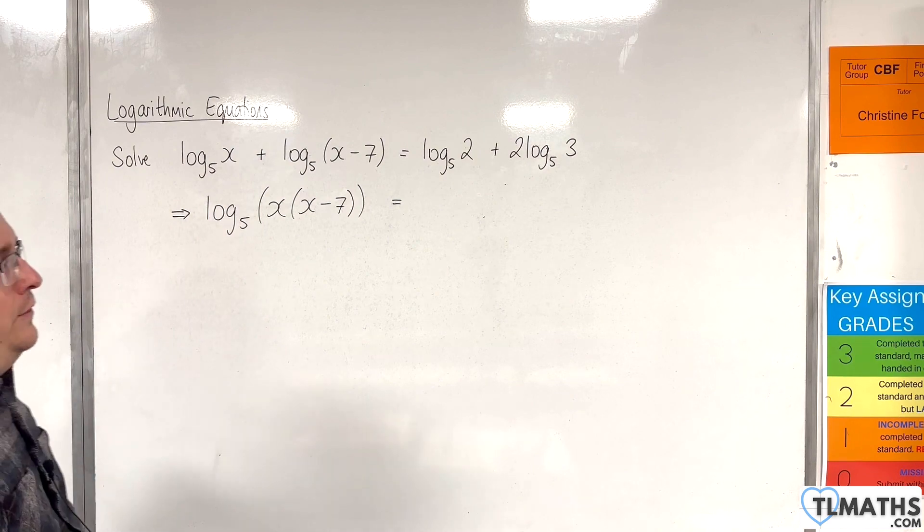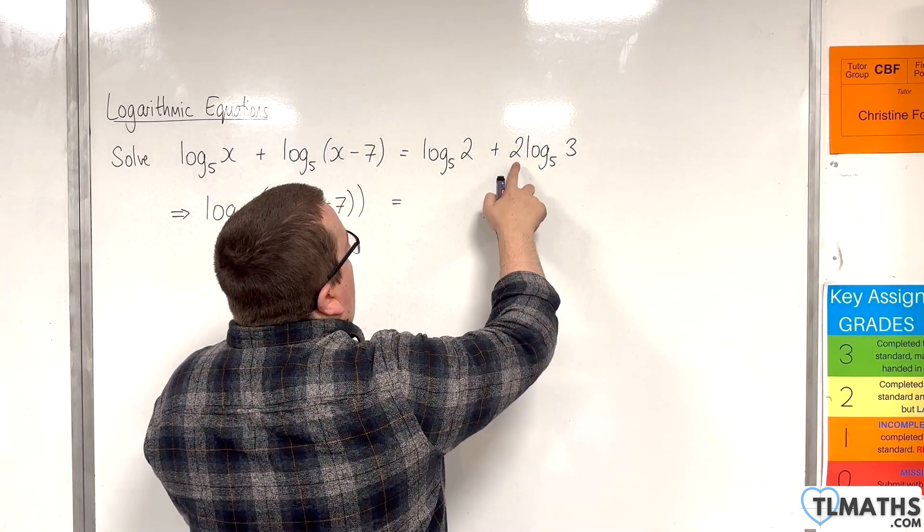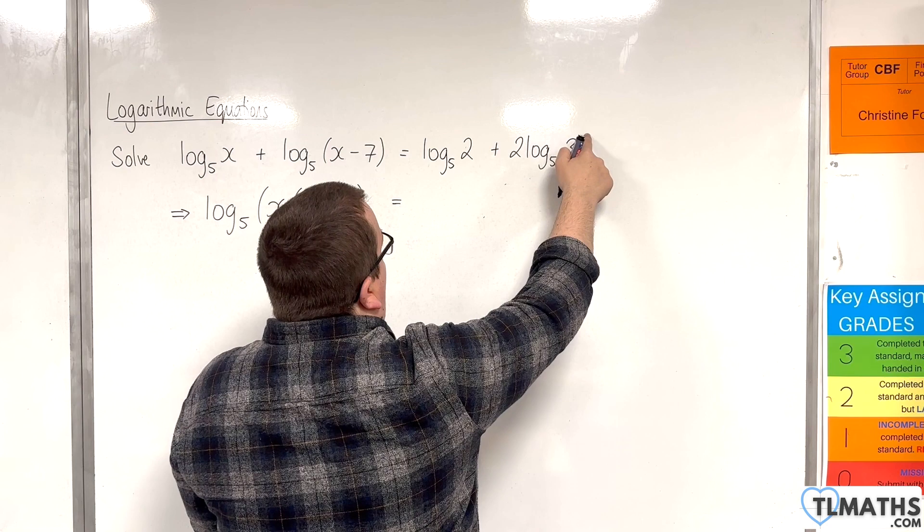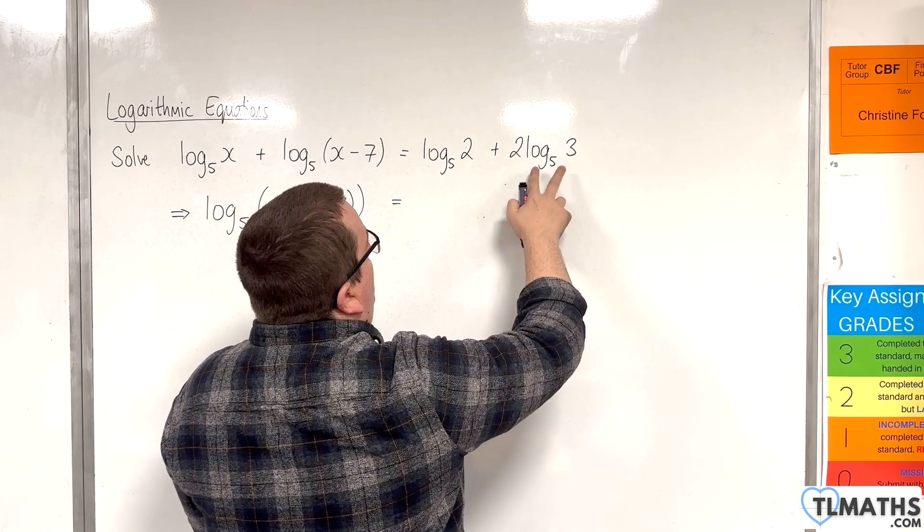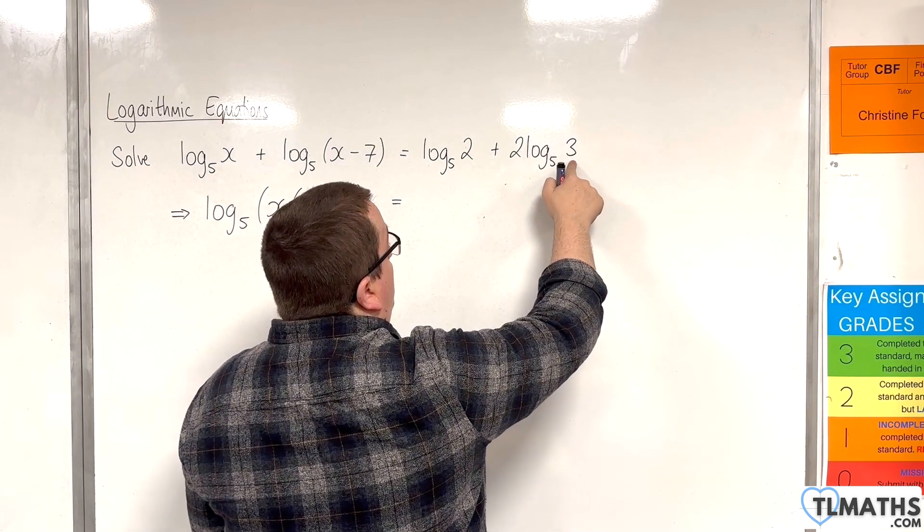Now the right hand side, the 2 can be brought up to the power here and so we would have log base 5 of 3 squared which is 9.